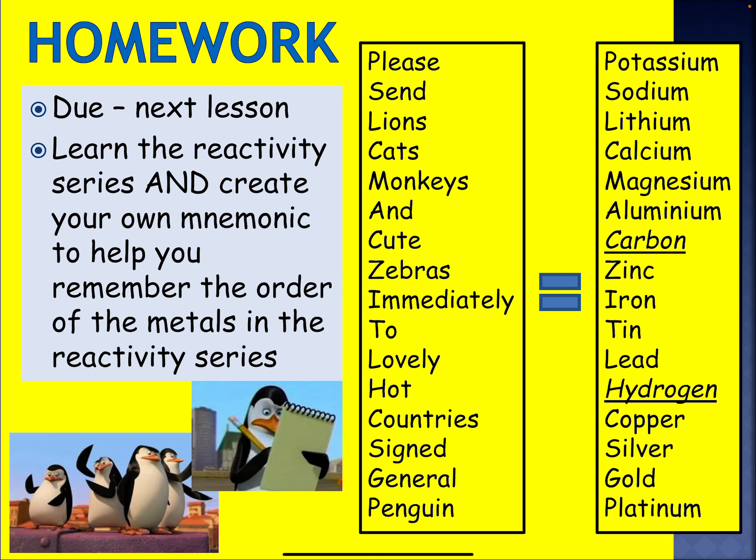Something for you to think about is to learn the reactivity series — create your own mnemonic to help you remember. Here is a mnemonic: 'Please send lions, lions, cats, monkeys and cute zebras immediately to lovely hot countries, signed general penguin penguin penguin.' That mnemonic helps you remember the correct order of the reactivity series. It is unlikely in the GCSE exam they will provide you with the reactivity series, so I would advise you to learn the correct order.